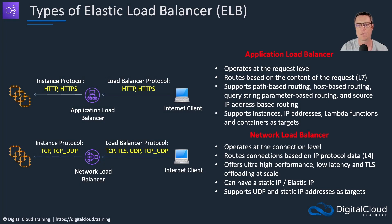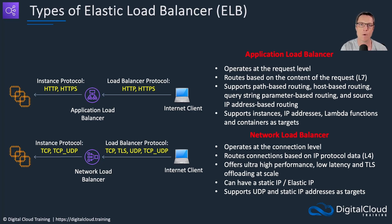Next, we have the network load balancer. This is the connection-level load balancer running at layer four — where TCP ports and UDP ports operate. It offers extremely high performance at extremely low latency, so watch out for those keywords if you're taking an exam. It's also the one for TLS offloading at scale. Another feature of the network load balancer is that you can have static IPs — elastic IPs in each availability zone — so you can hard-code and whitelist them in firewalls.